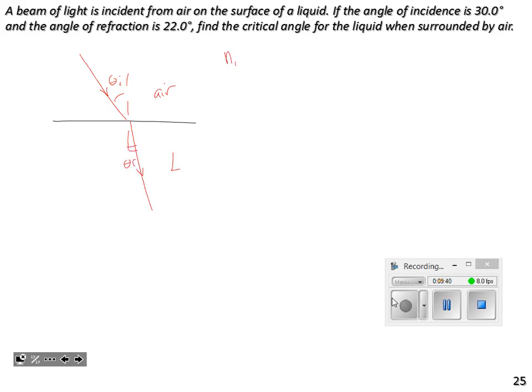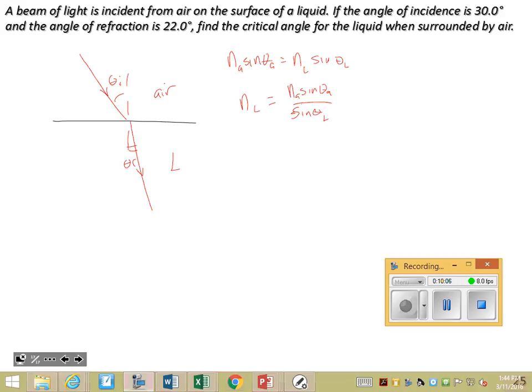I would start here with Snell's law. Say n air sine theta air is n liquid sine theta liquid. We're looking for n liquid, which is n air sine theta air over sine theta liquid. That's sine 30 over sine 22, and that gives us a liquid index of 1.33. Water has an index of 1.33, so that makes sense.